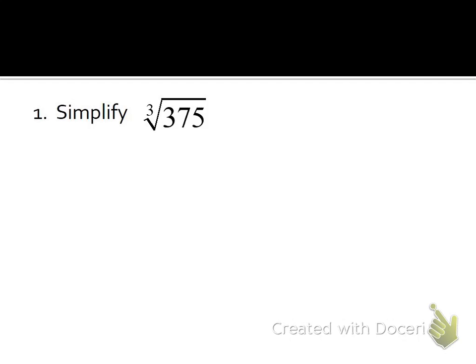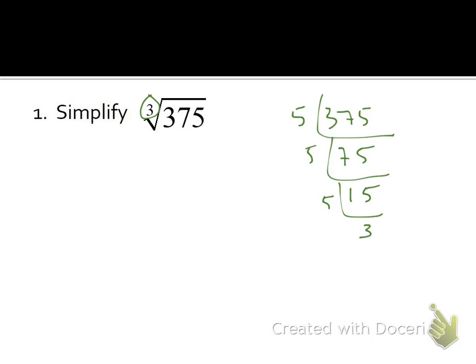Let's practice simplifying. For the cube root of 375, there's no negative, and the index is 3, so we need three guys to break one out. 5 goes into 375 seventy-five times, into 75 fifteen times, into 15 three times. Circle those three 5s, shoot two — a 5 comes out and the 3 stays inside. We get 5 times the cube root of 3.